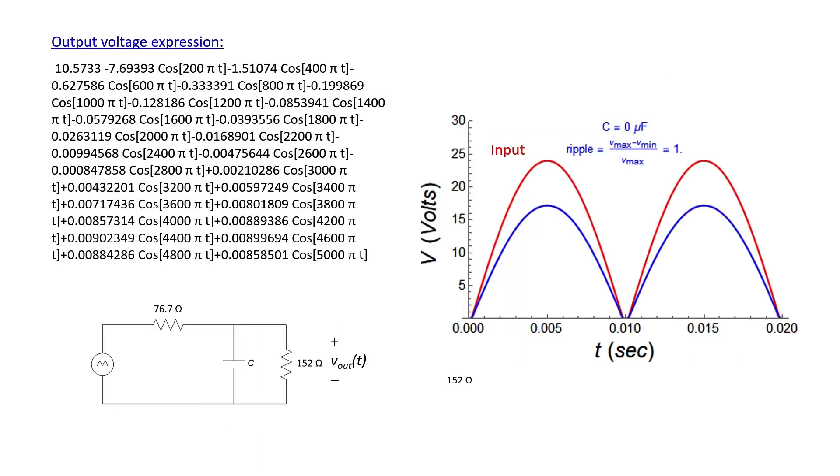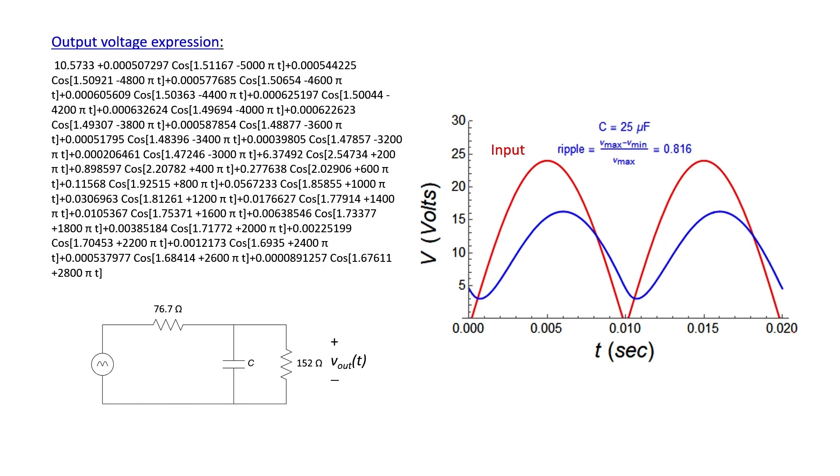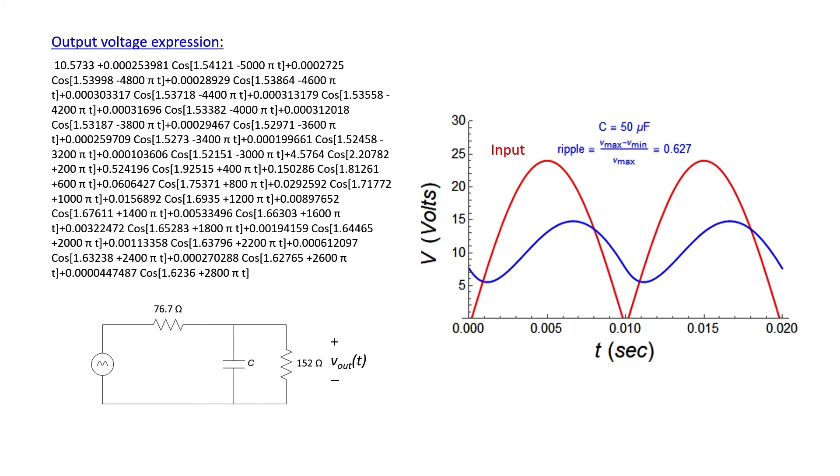Let's see how the output waveform now looks as I change the capacitor. Let's start with no capacitor at all or zero microfarads. Without a capacitor, we simply have a voltage divider. Our output voltage here in blue is just a reduced version of our input voltage.